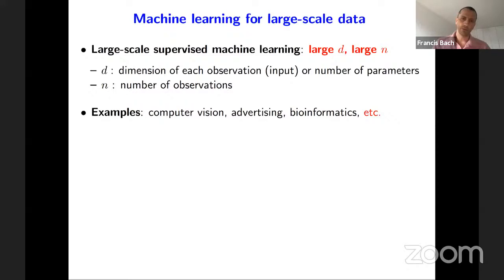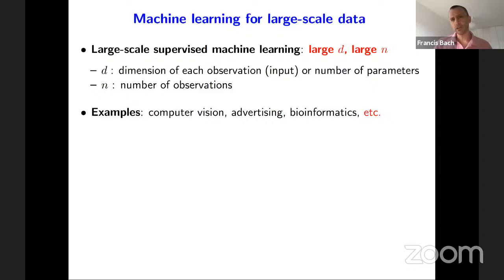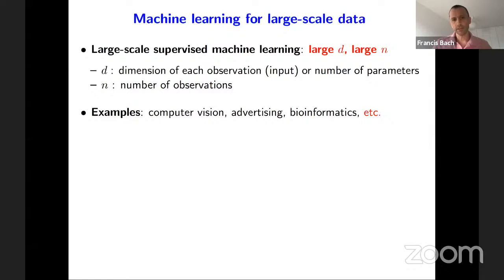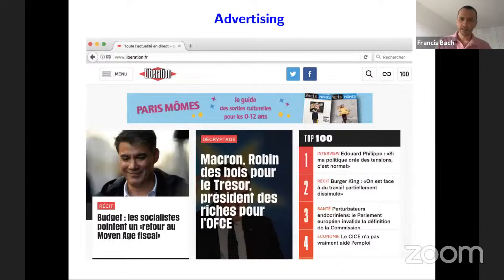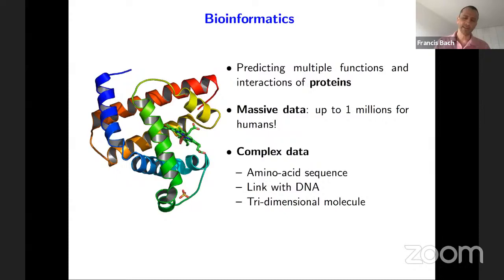Today we're going to look mostly at large-scale supervised machine learning, where there will be two magic numbers: d and n. N will always be the number of observations, typically millions or billions, and d will be the dimension of each observation or the number of parameters. For linear models those two are equal. There are many examples everywhere — computer vision, advertising — and there is now very strong performance of algorithms, such as examples from colleagues at INRIA where you can label even unusual situations in images.